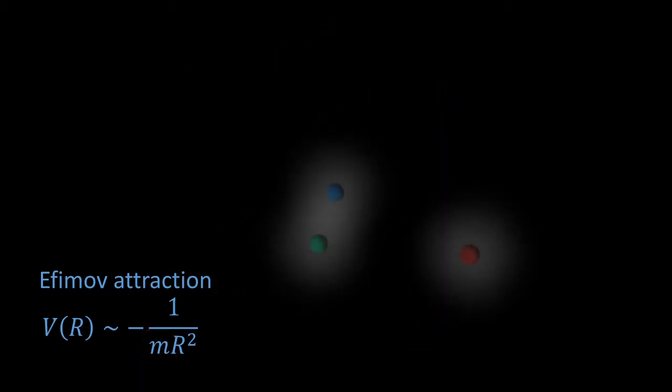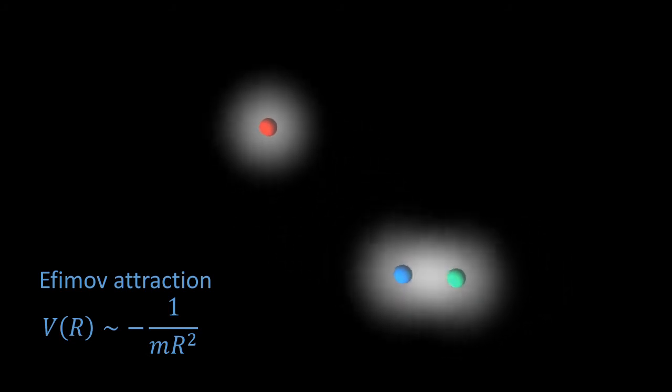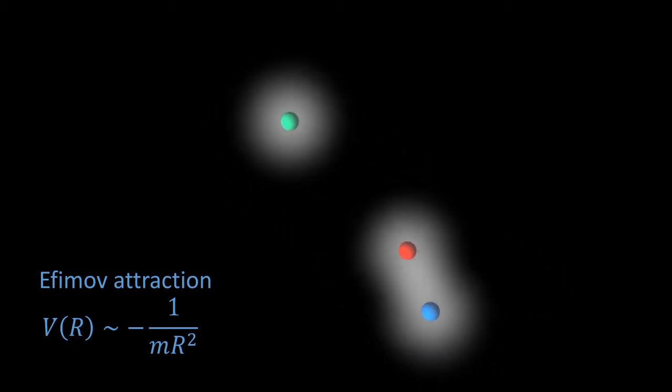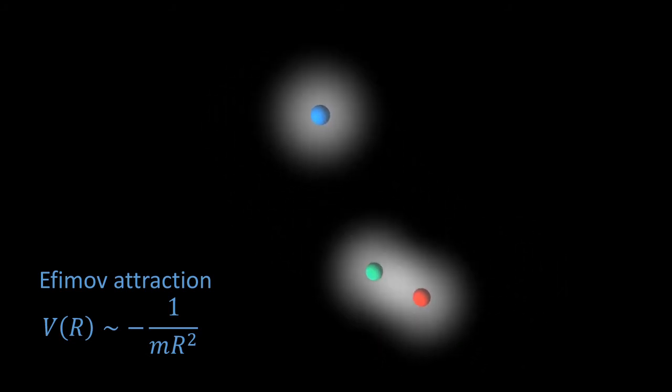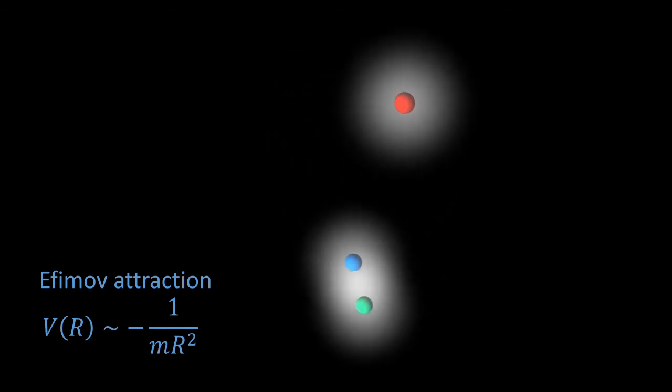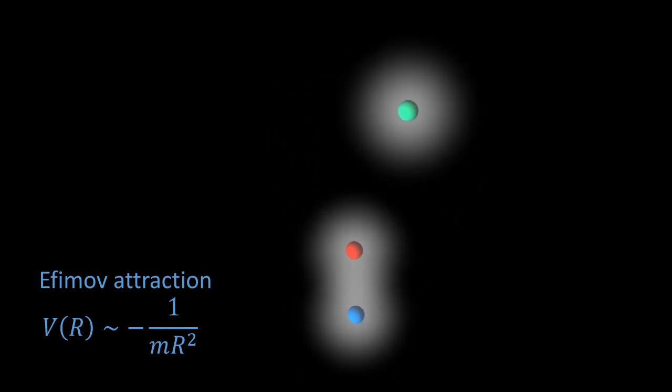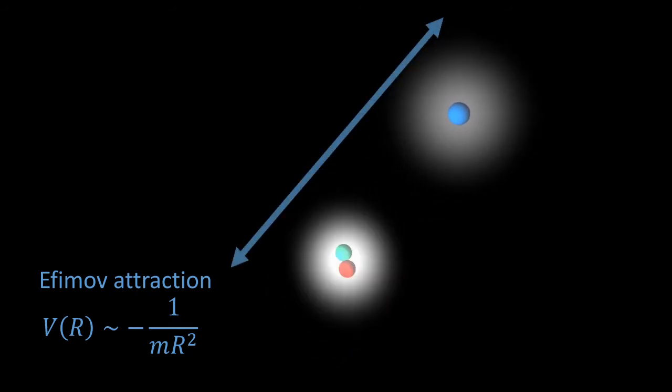Intuitively, this long-range attraction may be understood as an interaction between two particles mediated by a third particle. Since the motion of the particle is so delocalized, this mediated interaction has a long range despite the microscopic interaction having a short range.